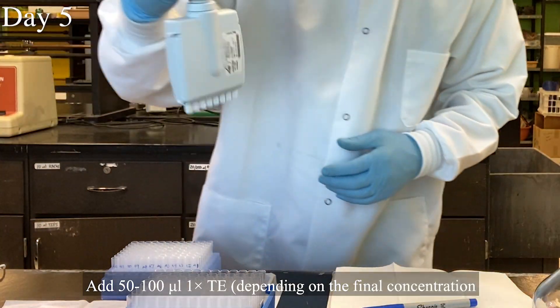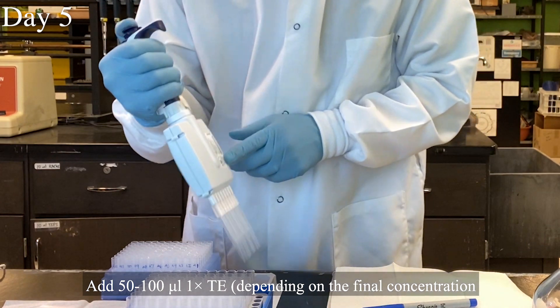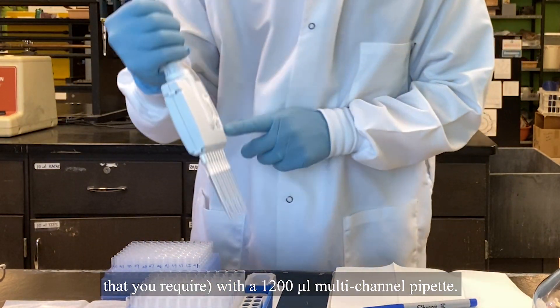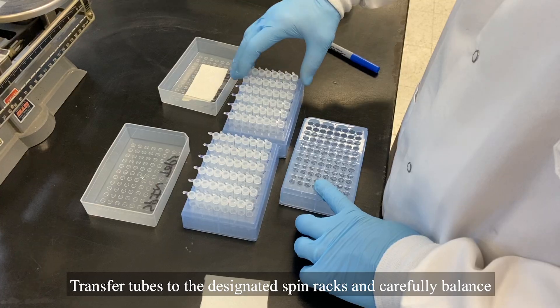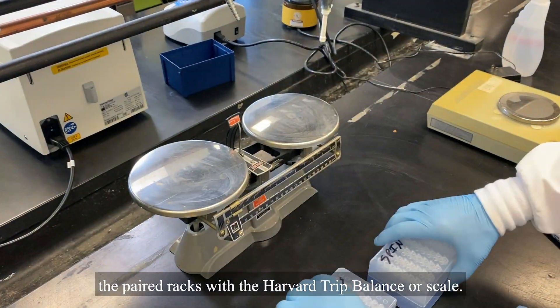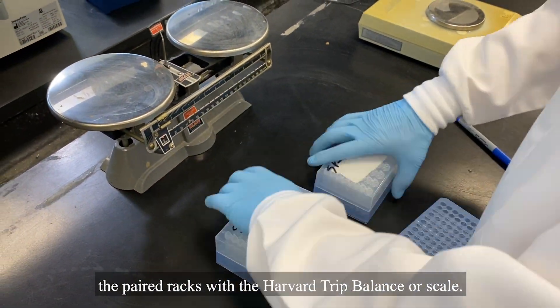Add 50 to 100 microliters 1X TE, depending on the final concentration that you require, with a 1200 microliter multi-channel pipette. Transfer tubes to the designated spin racks and carefully balance the paired racks with the Harvard trip balancer scale.